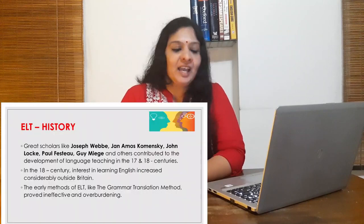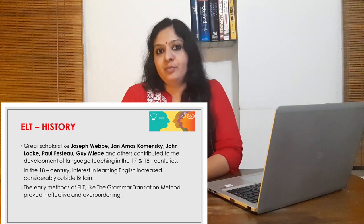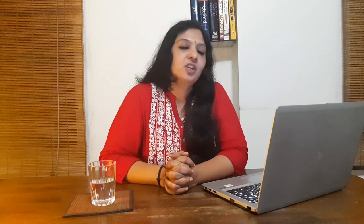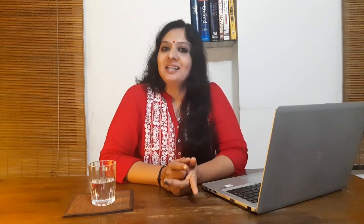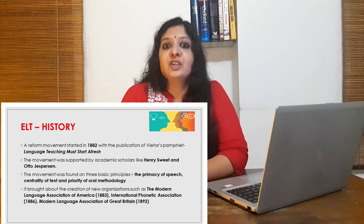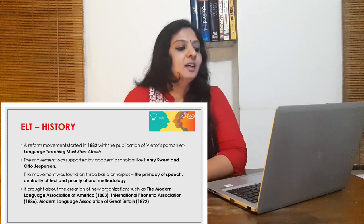In the 18th century, interest in learning English increased considerably outside Britain. The early methods of ELT — the grammar translation method — proved ineffective and overburdening for both learners and teachers. A reform movement started in 1882 with the publication of a pamphlet titled Language Teaching Must Start Afresh by Vieter, supported by two academic scholars, Henry Sweet and Otto Jespersen. The movement was founded on three basic principles: the primacy of speech, centrality of text, and the priority of oral methodology. It brought about the creation of new organizations such as the Modern Language Association of America in 1883, the International Phonetic Association in 1886, and the Modern Language Association of Great Britain in 1892.